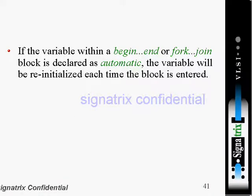If a variable within a begin...end or fork...join block is declared as automatic, the variable will be reinitialized each time the block is entered. Suppose we are declaring one variable as automatic within a begin...end or fork...join block. In that case, whenever it enters into that block again, it will be reinitialized.